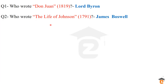The next question is: who wrote The Life of Johnson, which was published in 1791? The answer is James Boswell. James Boswell was the writer of the book, which was the biography of Dr. Samuel Johnson. The Life of Johnson was published in 1791 and written by James Boswell.